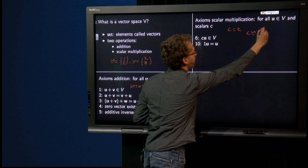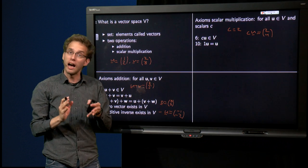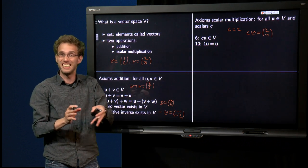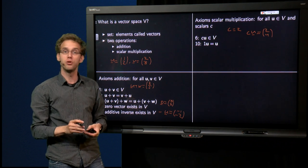Which is again a vector. And we need to have that 1 times u is again u. It doesn't change u. Well, that is obviously true for vectors in Rn.